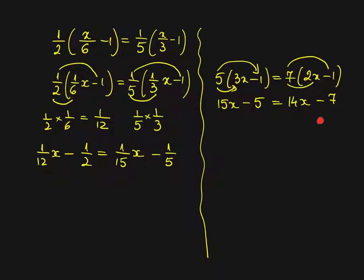What can I do here next? I have x on both sides. These are like terms. So I need to bring them all in one side by subtracting 14x from this side. And then I will get x. 15x minus 14x is x. x minus 5 equals negative 7.